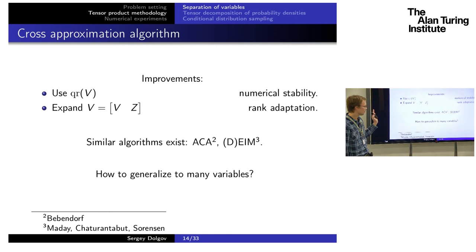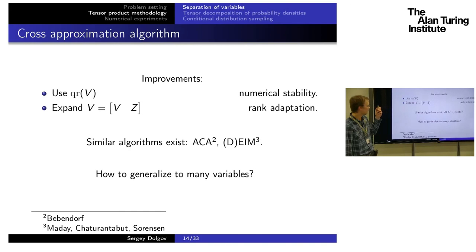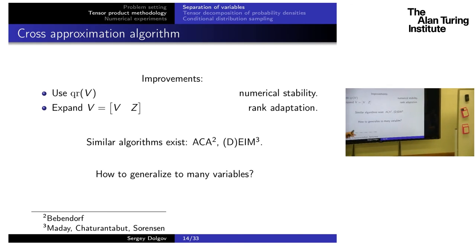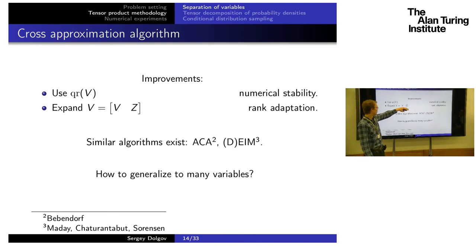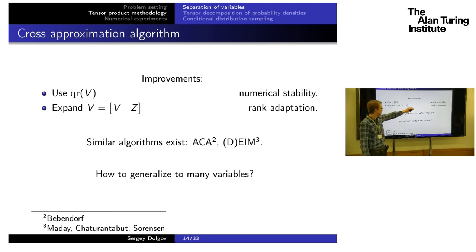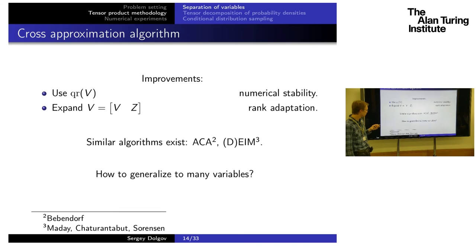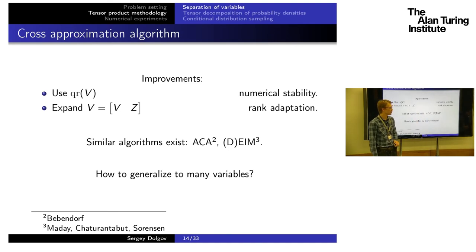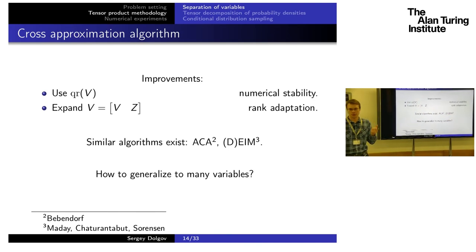There are some improvements related to numerical stability at machine precision. For example, before applying row pivoting in the LU decomposition, you can compute QR of the factor or expand the factor with some random columns or surrogates of the error. In this case, you can possibly increase the rank if it was insufficient in the initial iteration. The good thing to know is that the idea of cross interpolation was discovered and applied heavily in other communities, such as integral equations and model order reduction — it's some mature methodology.